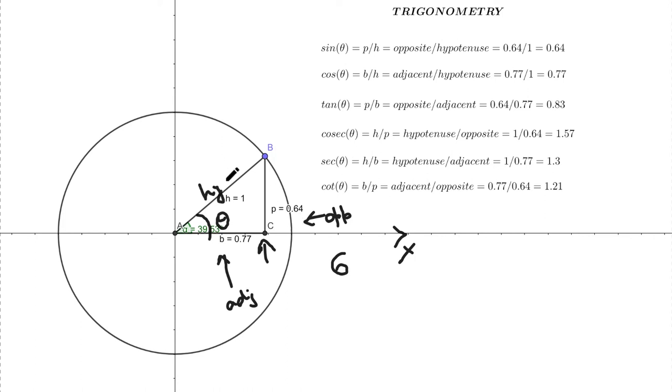Sin theta is p by h, perpendicular by hypotenuse. Cos theta is defined by b by h. Tan theta is defined by p by b, that is opposite by adjacent. Cosecant theta is h upon p, that is hypotenuse by opposite. Secant theta is defined as hypotenuse by adjacent and cot theta is defined as b by p. These are the six trigonometric ratios.